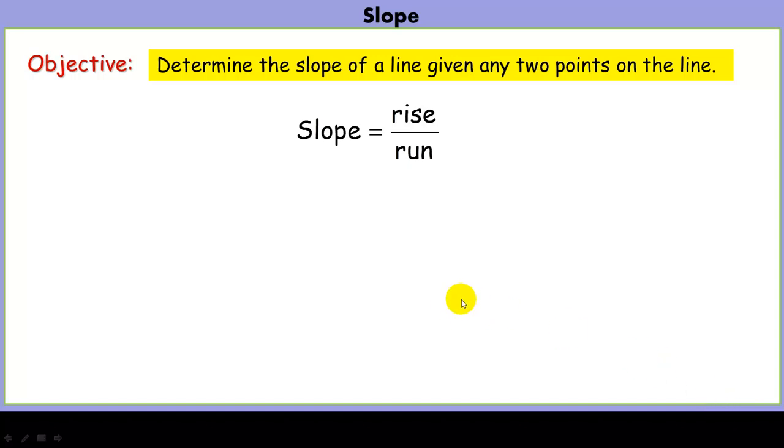Hey guys, today we're going to talk about slope. Most of you know the definition of slope, or at least a loose definition, that slope is equal to rise over run, and we'll talk more in detail about what that exactly means.